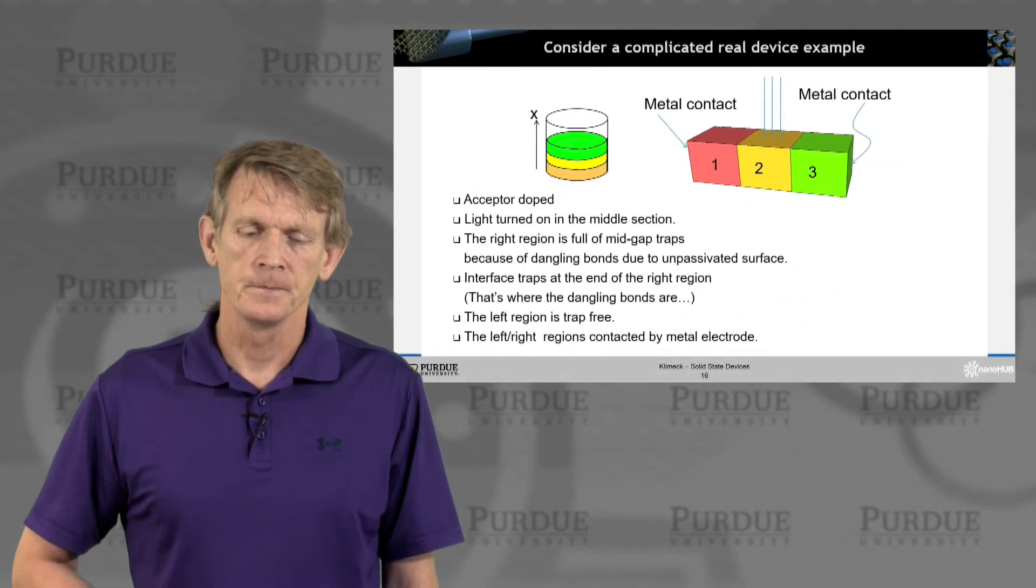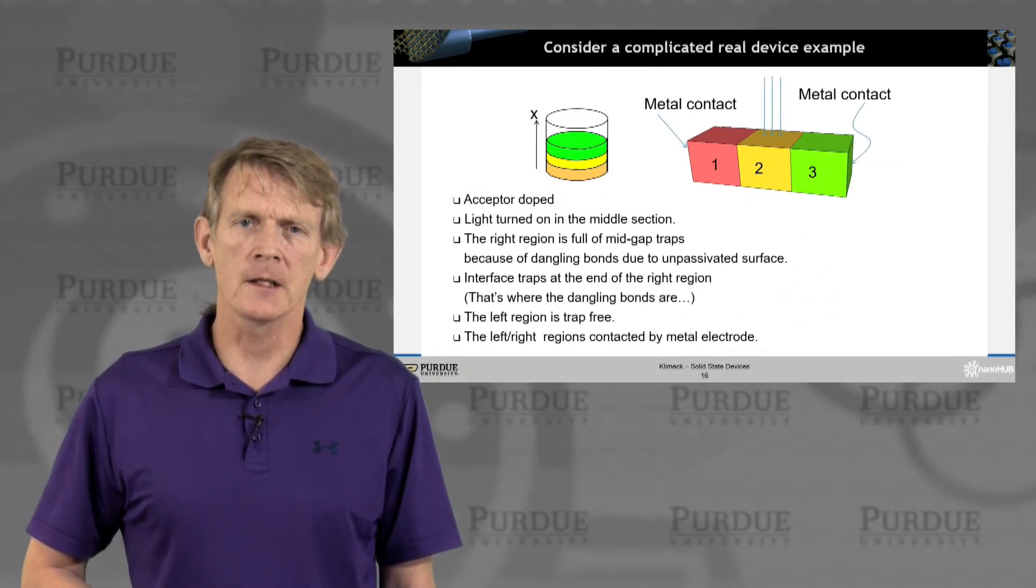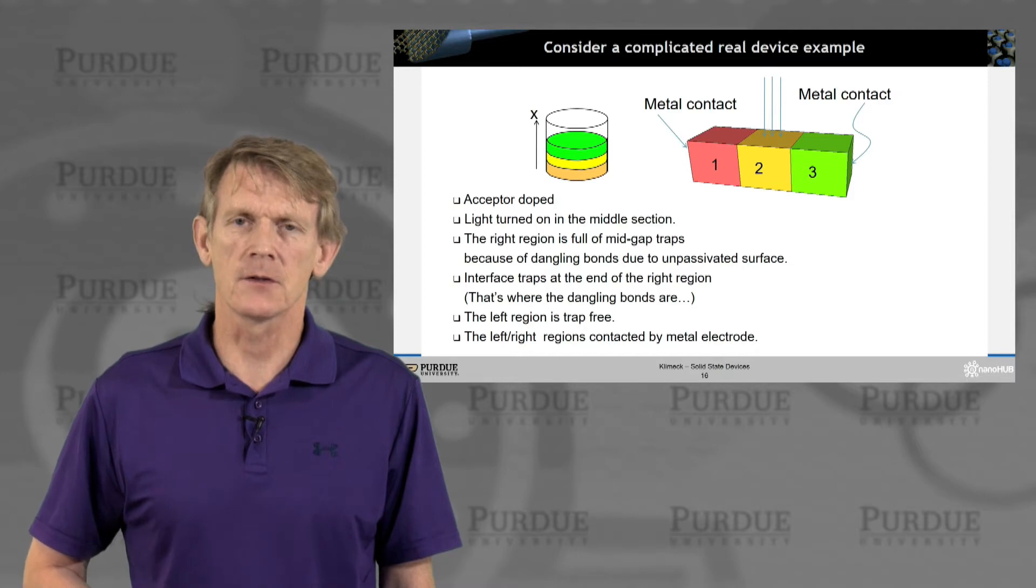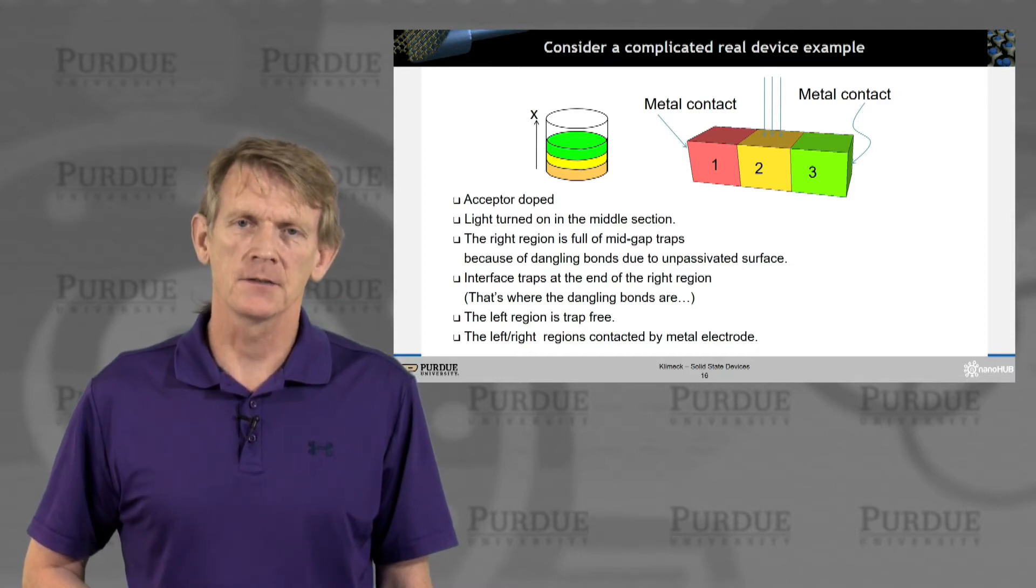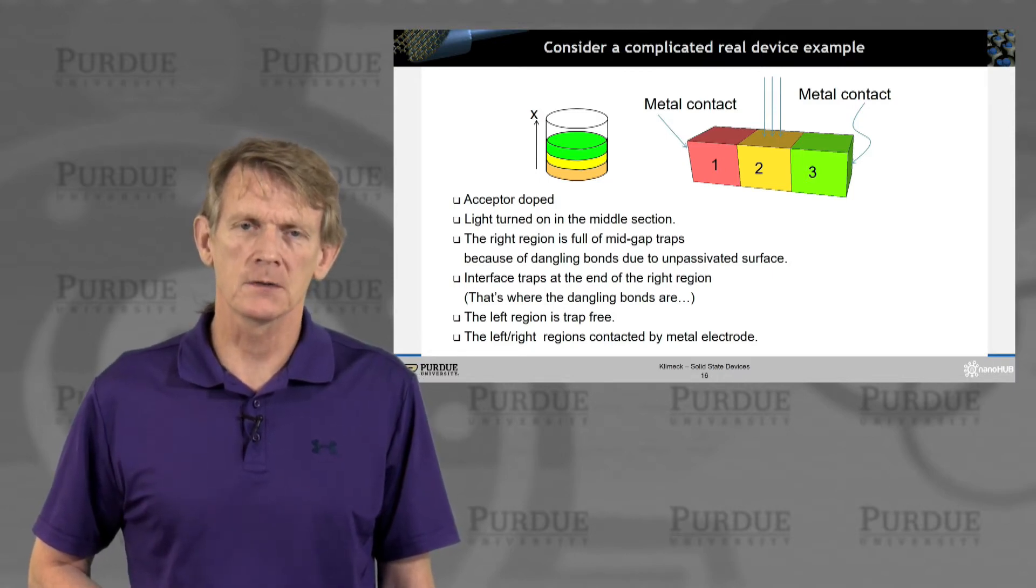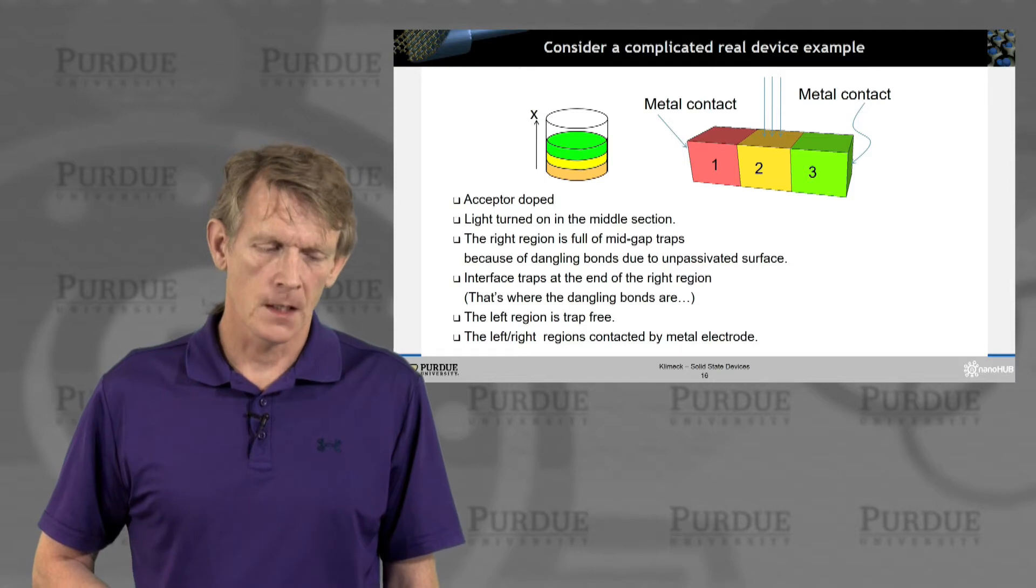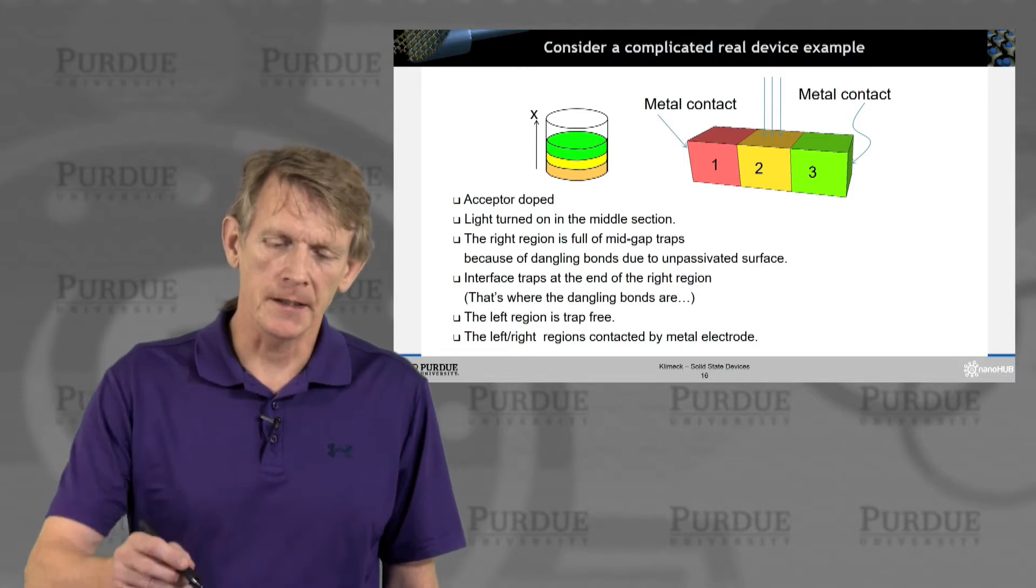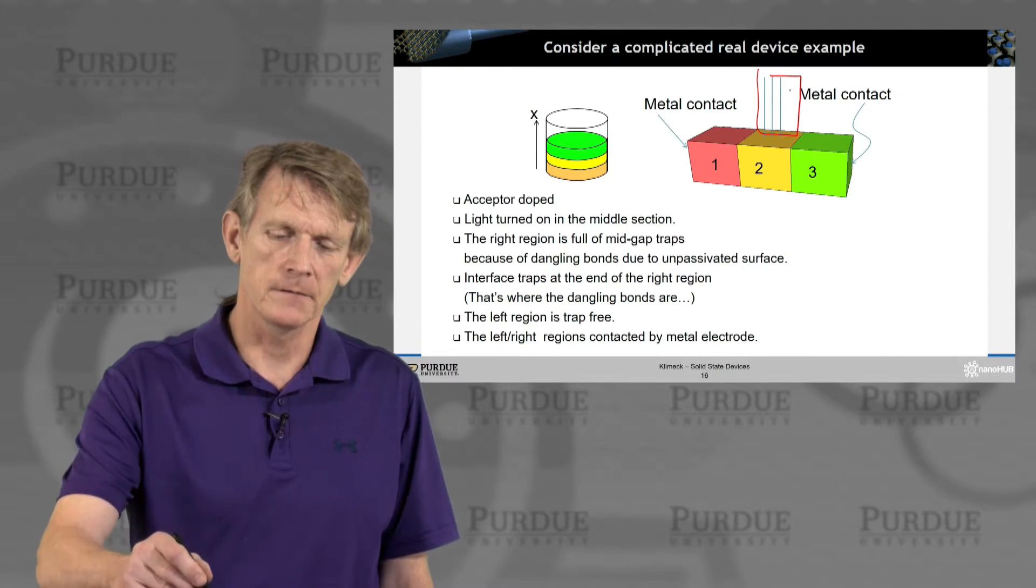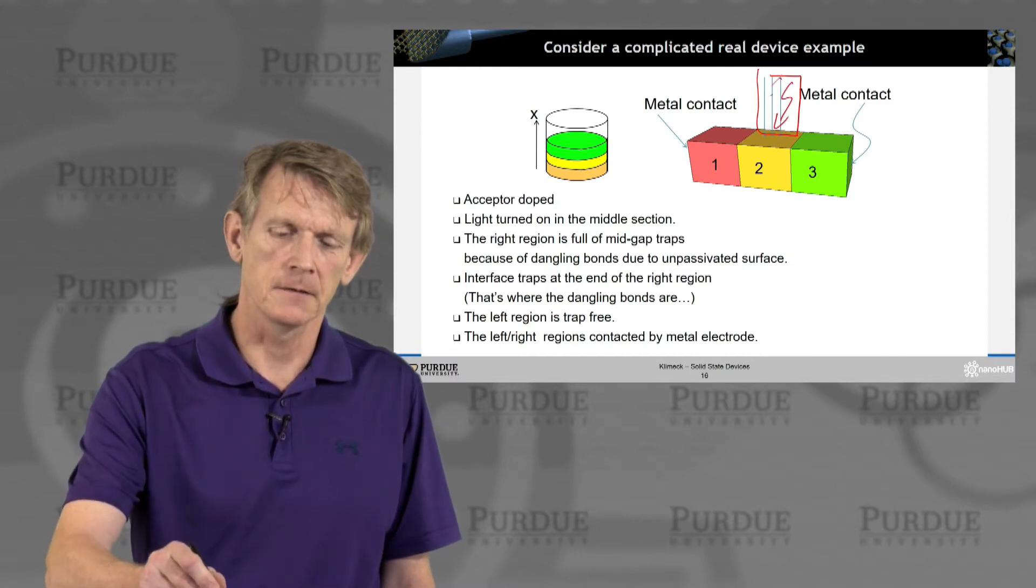Okay, so concretely, we'll consider a case that we carry through in this lecture, where we consider this device consisting of three layers. There's a metal contact on the left and the right. And let's assume this thing is acceptor-doped, so p-doped. And we turn on light here in the middle of this device, we have a bunch of light shining in like this.